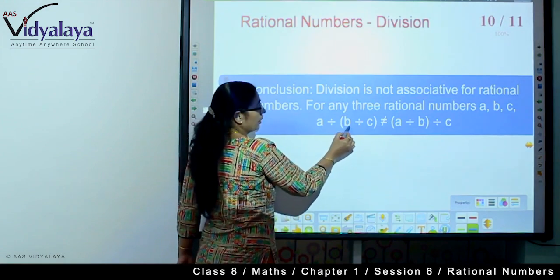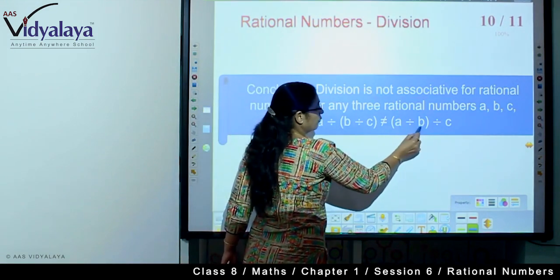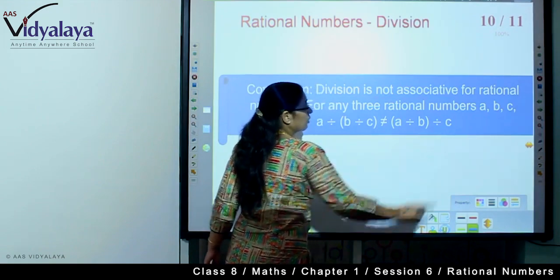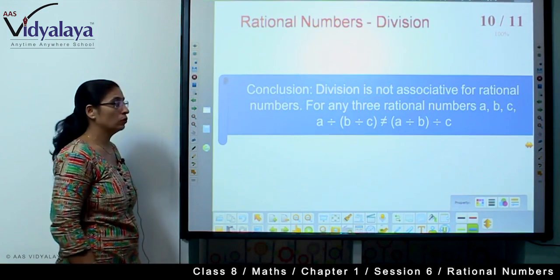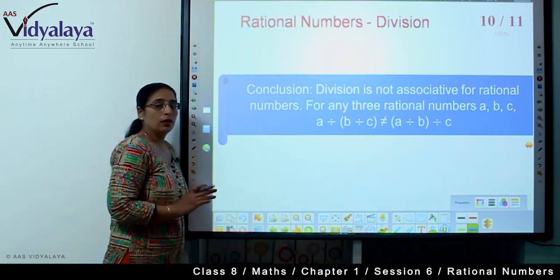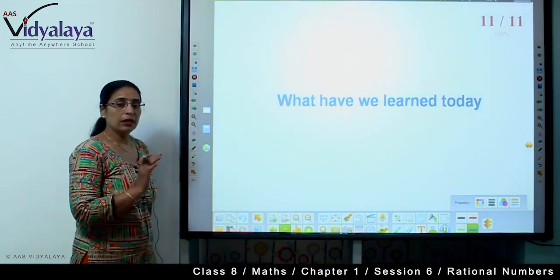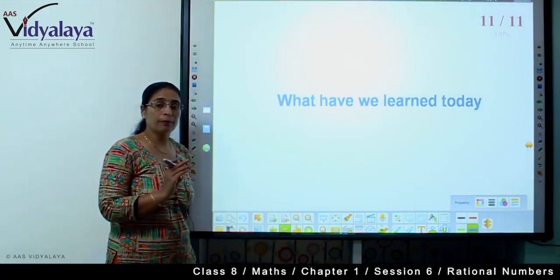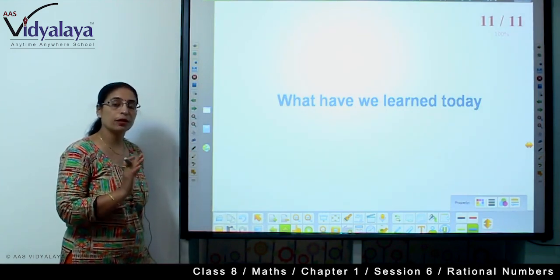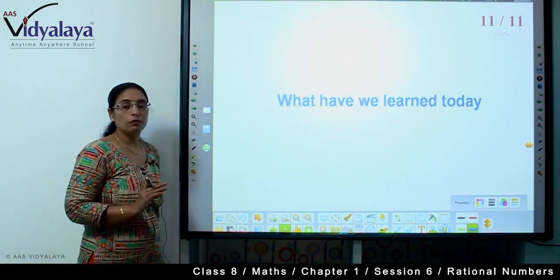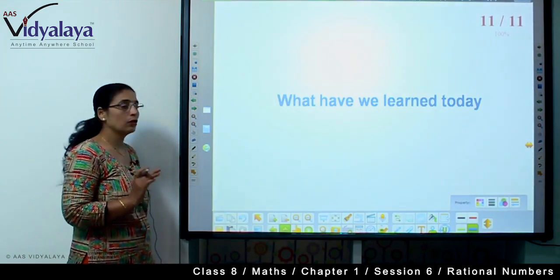Are these values equal? No, they are not equal. So what we learned? Division is not associative for rational numbers. We cannot make association according to us.